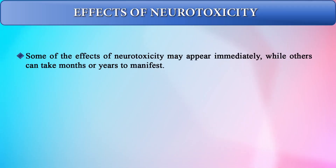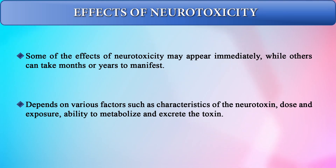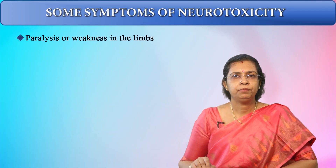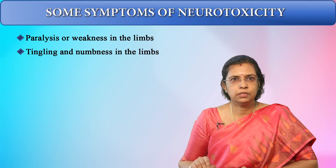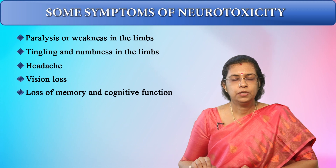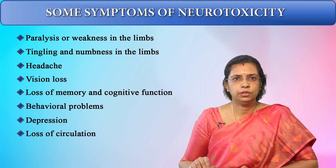The effects of neurotoxicity may appear immediately, while others can take months or years to manifest, depending on characteristics of the neurotoxin, dose and exposure, and ability to metabolize and excrete the toxin. Symptoms of neurotoxicity include paralysis or weakness in the limbs, tingling and numbness, headache, vision loss, loss of memory and cognitive function, behavioral problems, depression, loss of circulation, and imbalance.